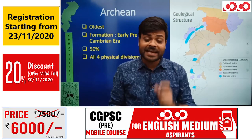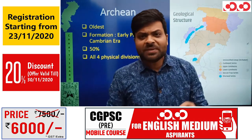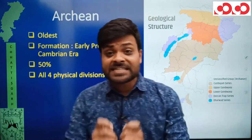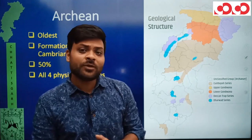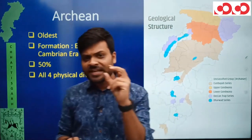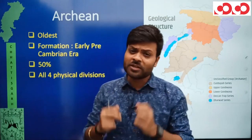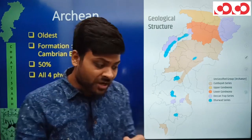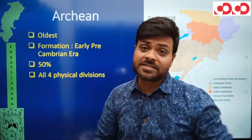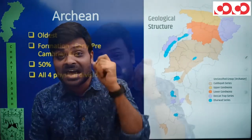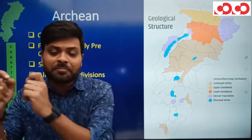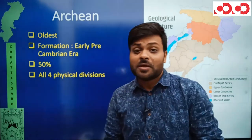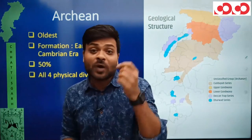Now we will see each rock one by one. First is Archean rocks — as I told you, these were the first rocks to form on Earth. They are igneous, and igneous rocks are very hard because they have many small crystals whose bonding is very strong, making them very hard in character. So Archean rocks are the oldest and the hardest. Their formation was in the early Pre-Cambrian age, and their extension covers 50% of 36 Garh's area.